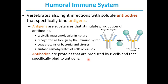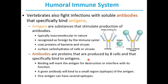Antibodies are proteins produced by B cells that specifically bind to antigens. Binding of an antibody to an antigen marks the antigen for destruction or interferes with its function. A given antibody will bind to a small region, called an epitope, of the antigen. One antigen can have several epitopes — an epitope is the specific region that an antibody recognizes, and it doesn't necessarily have to be the only region recognized.